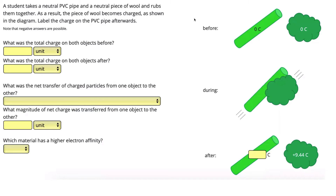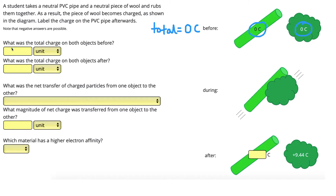In this question, we have charging by friction occurring as a PVC pipe is rubbed on a piece of wool. We can see at the beginning both are neutral — they both are labeled with a charge of 0 coulombs. Our total charge at the beginning, therefore, is 0 plus 0, which is 0 coulombs total. What was the total charge on both objects before? Zero, and our unit is coulombs.